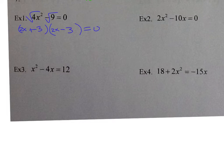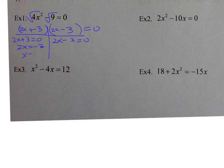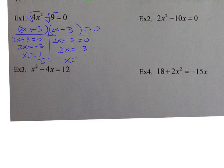Make your t-chart and set each factor equal to zero. 2x plus 3 equals 0, and 2x minus 3 equals 0. Solve: subtract 3 from both sides, I get 2x equals negative 3, divide by 2, I get negative 3 halves. On the right side, add 3 to both sides, I get 2x equals positive 3, divide by 2, I get 3 halves.